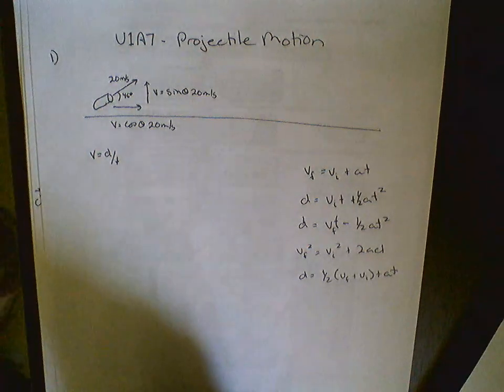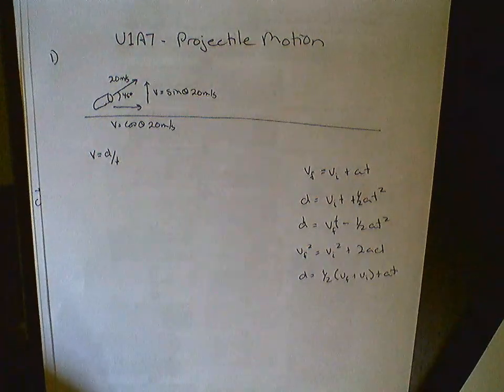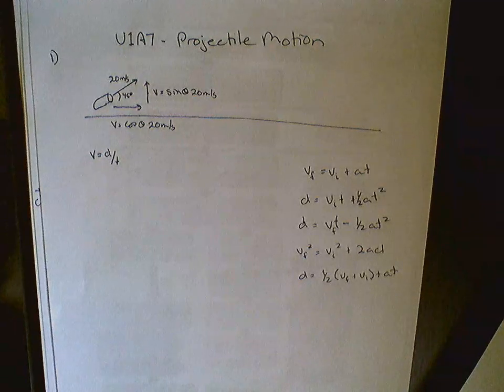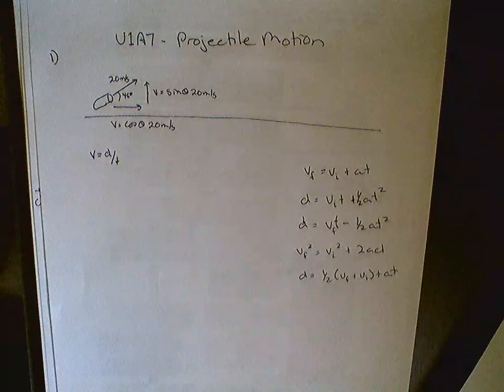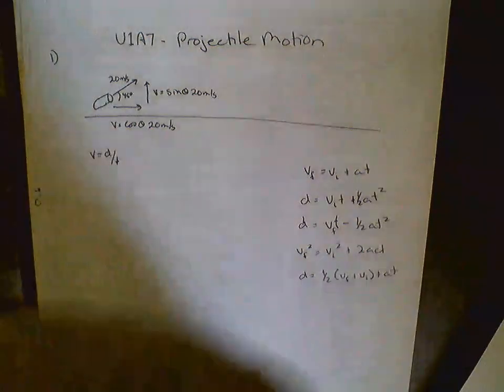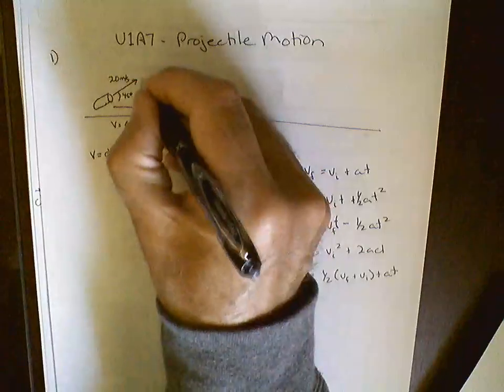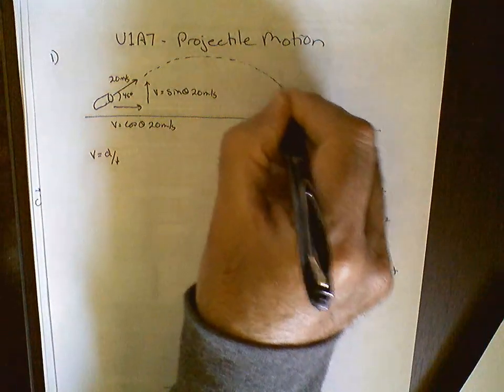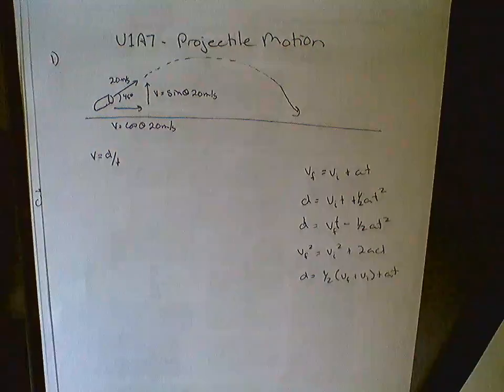What we're doing right now is projectile motion, which means that we have an initial force on an object, so on a cannonball, and then the only force after that that's exerting anything on it is gravity. So we usually get a parabolic motion something like this.